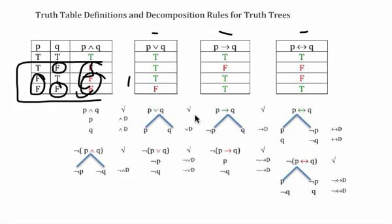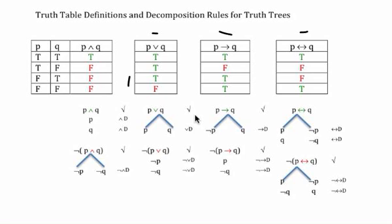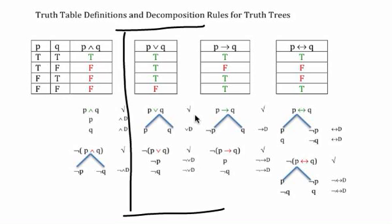We'll notice this pattern with the other operators as well: whenever the non-negated version stacks — meaning there's only one way for it to be true — there will be more than one way for it to be false, so the negated version will branch. Conversely, if the non-negated version branches, as we'll see with disjunction, then the negated version will stack.